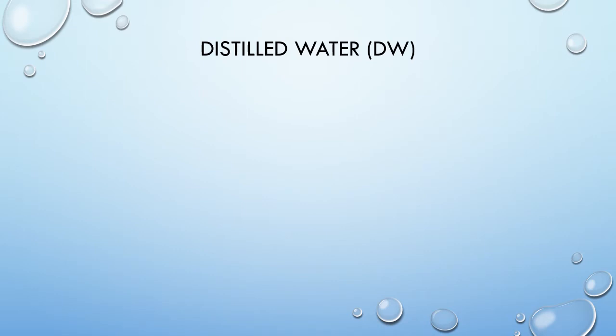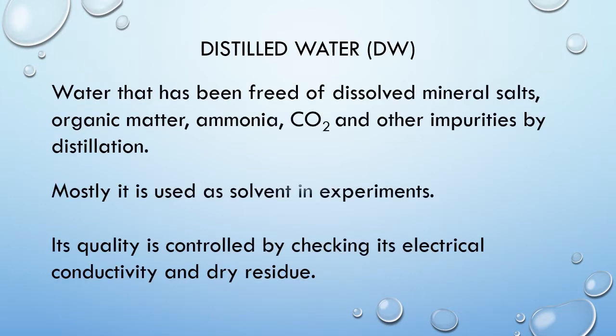First is distilled water, abbreviated as DW. Distilled water is water that has been freed of dissolved mineral salts, organic matter, ammonia, CO2, and other impurities by distillation. It is mostly used as a solvent in experiments or practicals, and even for media preparation. Its quality is controlled by checking its electrical conductivity and dry residue.